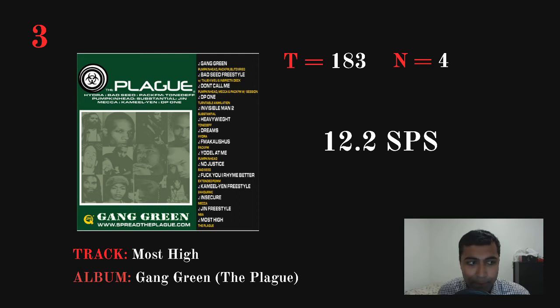Number 3: That was 'Most High' off The Plagues Gangrene. I think this was an album off of one of his Q N5 label mates—correct me if I'm wrong. That was 12.2 syllables per second at number three. And you might think, 'Man, this is relatively slow. Tech N9ne by now was at 12.5, Twisted Insane by now was at 13.6—where can he go from here?' Well, you'll find out right now.